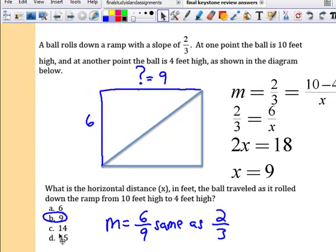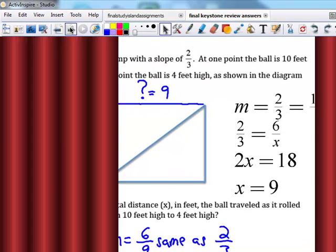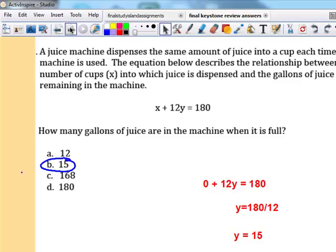You can hopefully use some common sense. You can see all that work that I did with cross multiplying, but again common sense should step in. If the rise is 6, the run has to be 9. If you look at your choices here, 6 over 9 is the same as 2 thirds, so answer is B.